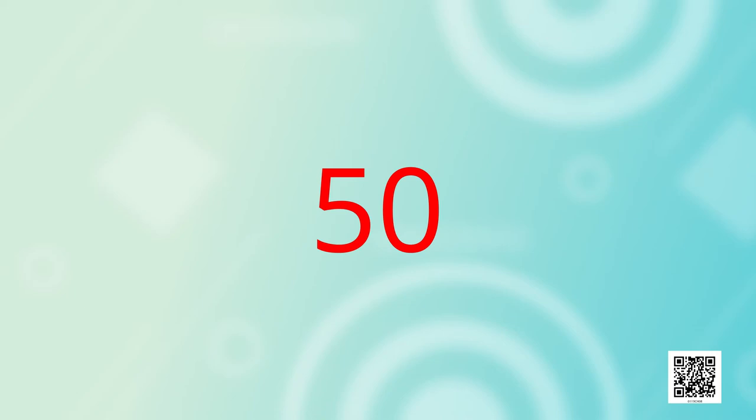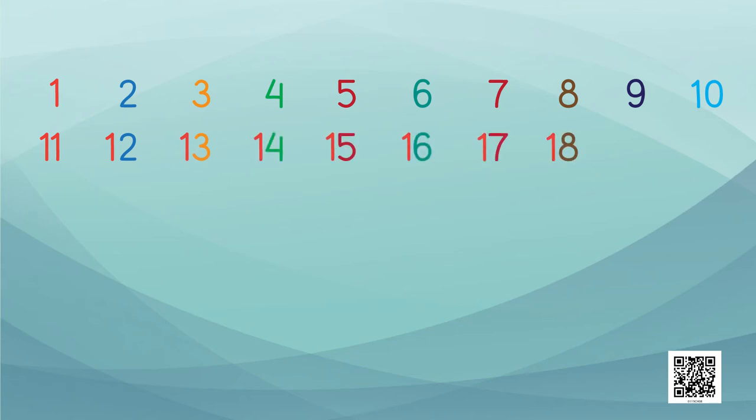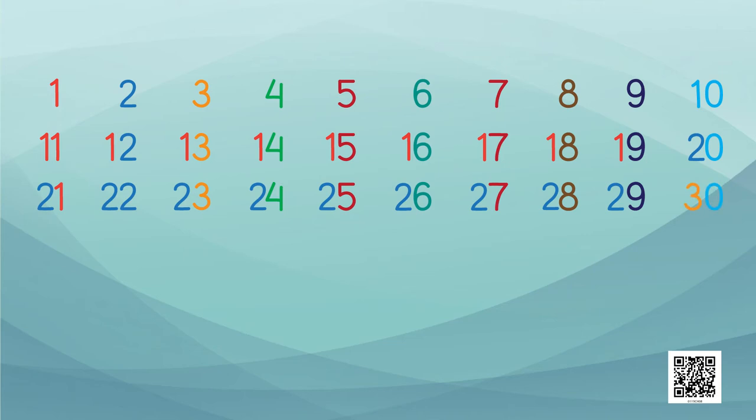So, first, tell me the numbers from 1 to 30. Okay, okay. 1, 2, 3, 4, 5, 6, 7, 8, 9, 10, 11, 12, 13, 14, 15, 16, 17, 18, 19, 20, 21, 22, 23, 24, 25, 26, 27, 28, 29, 30. Yes, good.